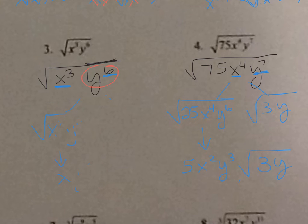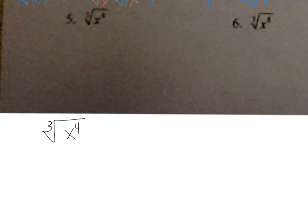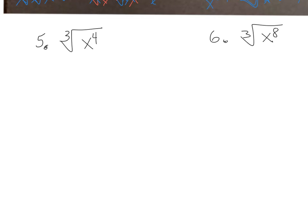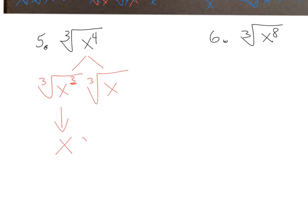Now let's work on perfect cubes. Number five: the cube root of x to the fourth. Remember, for perfect cubes the exponents must be multiples of three. The largest perfect cube in x to the fourth is x to the third times x. x to the third is a perfect cube. The cube root of x to the third — divide 3 by 3 — gives x to the first. So the answer is x times the cube root of x.